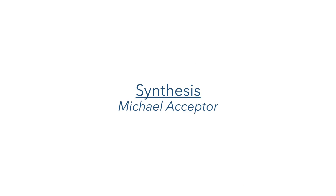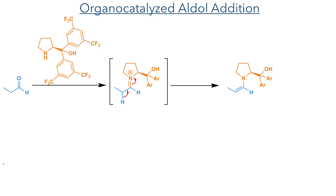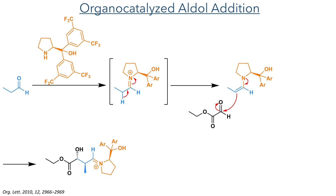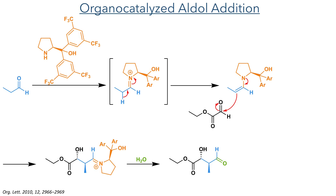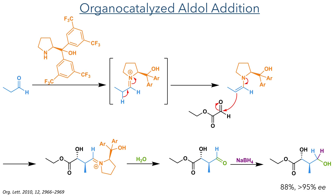To synthesize the Michael acceptor, they first carried out an organocatalyzed aldol addition. The reaction of the aldehyde with the chiral pyrrolidine catalyst first forms an iminium ion that eliminates to generate an enamine. This enamine is nucleophilic and attacks the aldehyde, preferentially adding from one face. A hydrogen bond between the catalyst and the aldehyde acceptor helps orientate the electrophile and increase stereoselectivity. Hydrolysis of the resulting iminium species forms the aldehyde, which was then reduced with sodium borohydride to give the target diol in 88% yield with greater than 95% ee.